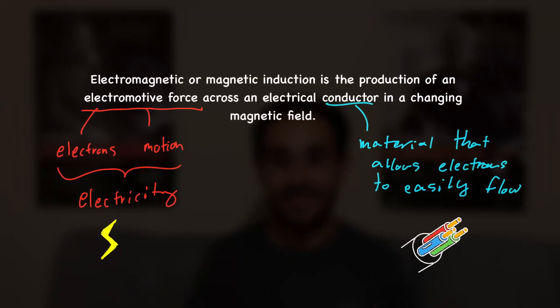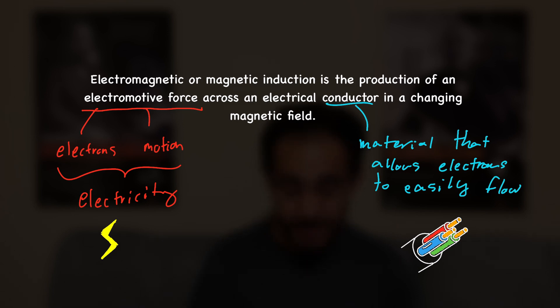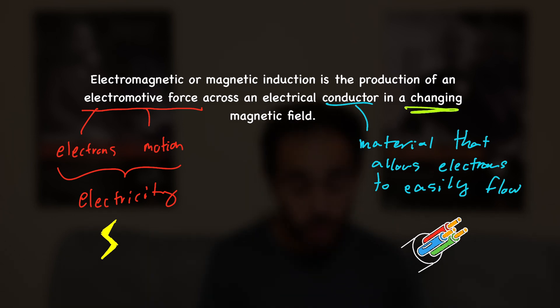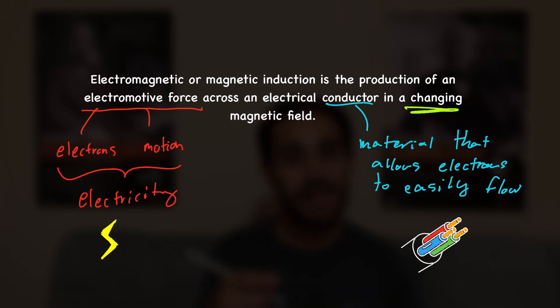Now let's finish up the definition. Across an electrical conductor in a changing — that's crucial — magnetic field. Now a magnetic field is just like the invisible region around a magnet, which can cause magnetic forces on different types of objects.